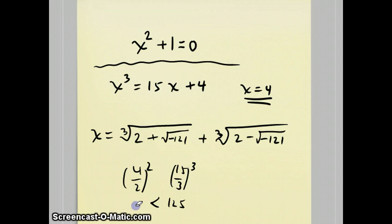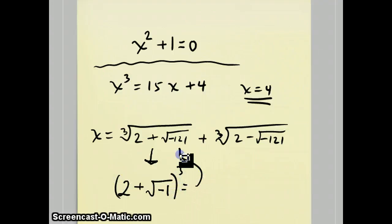And Cardano missed a great opportunity here to discover imaginary numbers. He'd come pretty close to it. It was a few years later, maybe 10 or 15 years later, that someone named Bombelli had an idea. And I'm not sure how he did this, but maybe by some sort of trial and error, he realized that if you do 2 plus the square root of negative 1 and you cube it, you will get this.